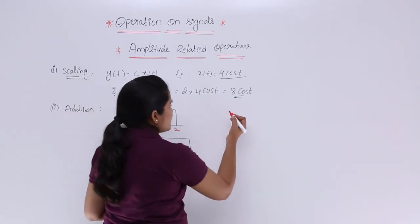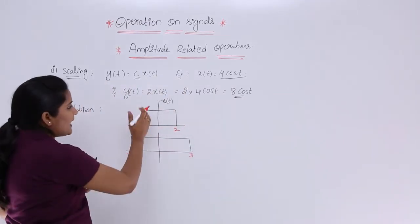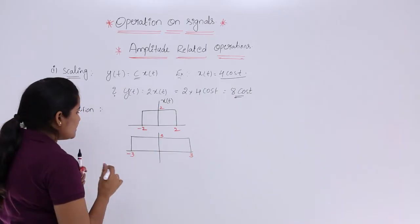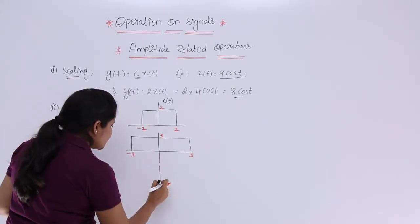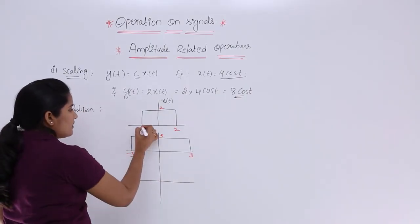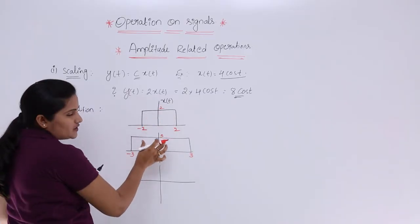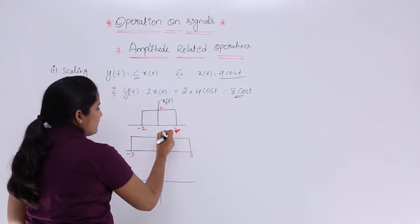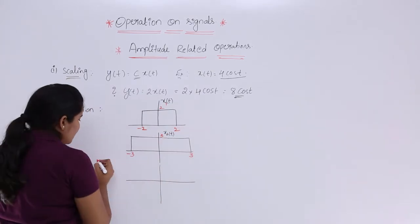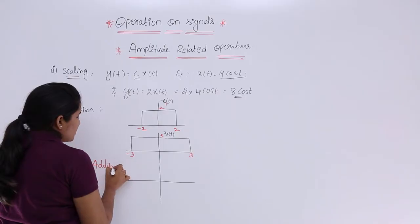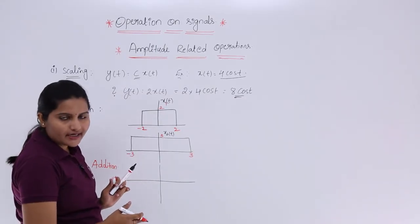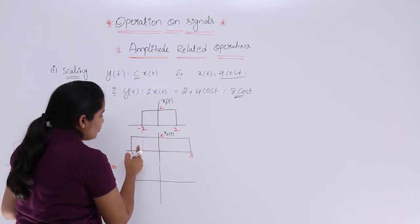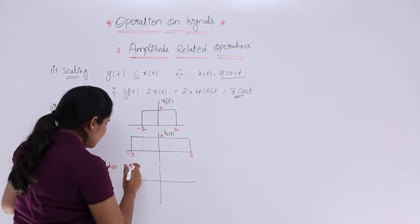For addition, the corresponding amplitudes are added. Here x1(t) has amplitude 2 and x2(t) has amplitude 3. Addition comes under amplitude operations. From -3 to -2 you have only x2(t) with amplitude 3. From -2 to +2 you have both signals.